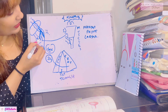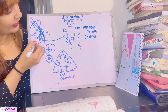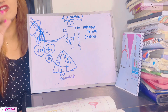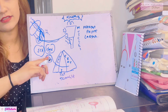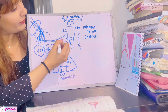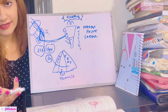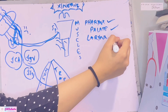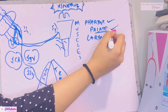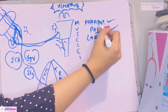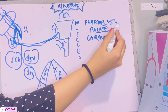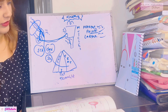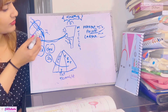The cranial root joins the vagus nerve. Together they travel in the pharyngeal branch of the vagus nerve into the pharyngeal plexus, from which they supply all the muscles of the pharynx, palate, and larynx — except for the tensor veli palatini of the palate and the stylopharyngeus of the pharynx.